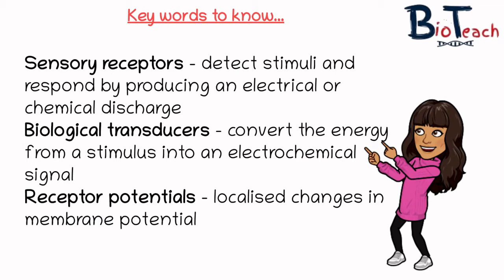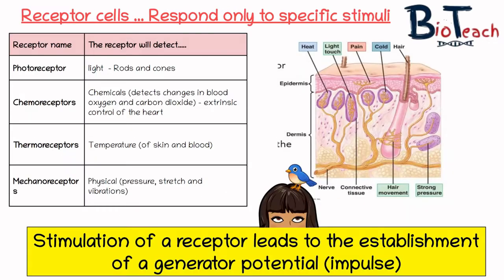Ultimately the stimulus is transduced into a nerve impulse, and the frequency of these nerve impulses — or how quickly they happen — is dependent on the stimulus strength. This part of the video is designed to allow you to understand the locations of these receptors and also their functions.